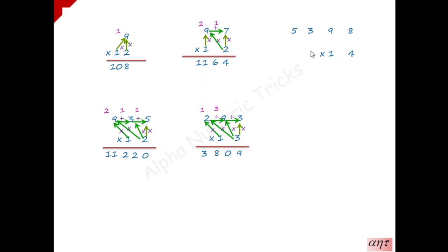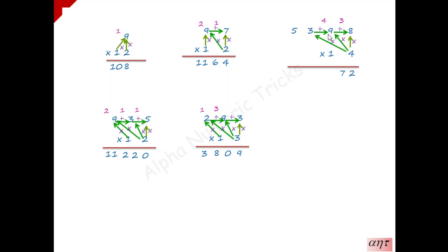Now we will see how to multiply a 4-digit number by 14 — this works for any multiplier from 12 to 19. 4 into 8 is 32 — 2 is written, 3 is carry forward written in between the numbers. 4 into 9 is 36, 36 plus immediate right number 8 is 44, 44 plus 3 carry forward is 47 — 7 is written, 4 is carried forward. 4 into 3 is 12, 12 plus immediate right number 9 is 21, 21 plus 4 carry forward is 25 — 5 is written, 2 is carry forward. 4 into 5 is 20, 20 plus 3 is 23, 23 plus 2 is 25 — 5 is written, 2 is carry forward. Multiply 1 with the last number 5: 1 into 5 is 5, 5 plus 2 is 7 — that is our final answer.